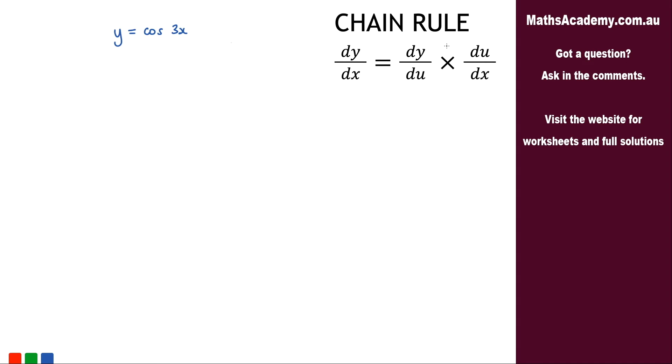The first thing I need to do is to make that substitution. So I'm going to say let u equal 3x. I need to differentiate that. So du by dx that will equal 3.